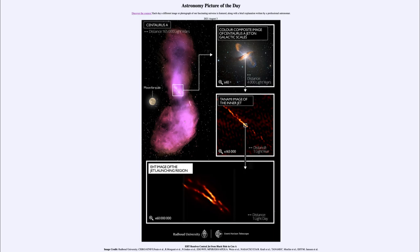As further studies go on with the Event Horizon Telescope, we're getting a better idea of what happens at the center of active galaxies such as Centaurus A. That was our picture of the day for August the 4th of 2021, titled 'EHT Resolves Central Jet from Black Hole in Cen A.' We'll be back again tomorrow for the next picture, which will be a meteor and the Milky Way. Until then, have a great day everyone, and I will see you in class.